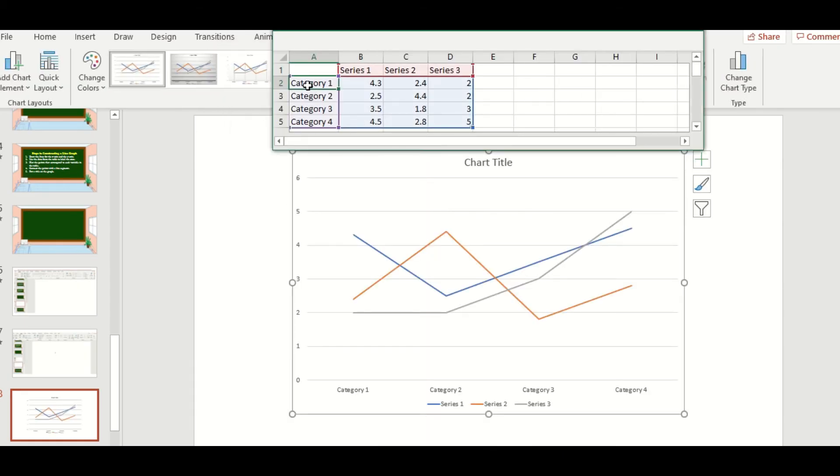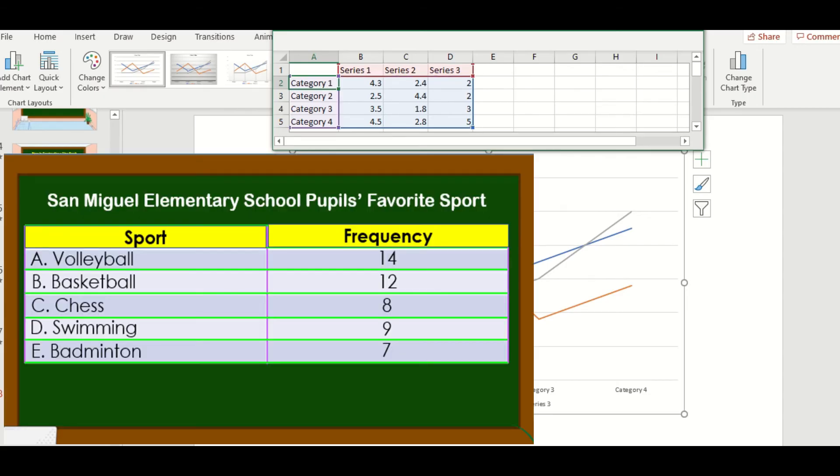For our category, we will base on our table. So in our example, category is the kind of sport. So we have volleyball, basketball, chess, swimming, and badminton.